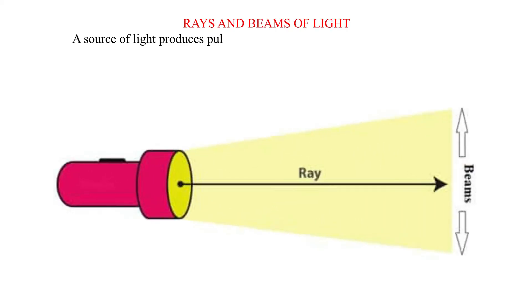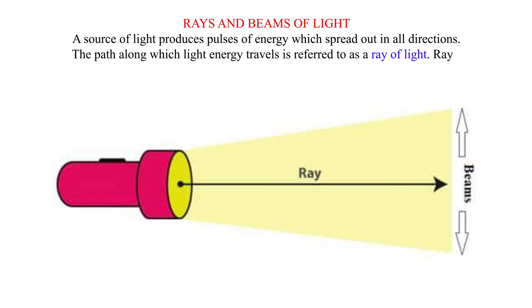Rays and Beams of Light. A source of light produces pulses of energy which spread out in all directions. The path along which light energy travels is referred to as a ray of light. Rays are represented by lines with arrows on them to show the direction of travel.